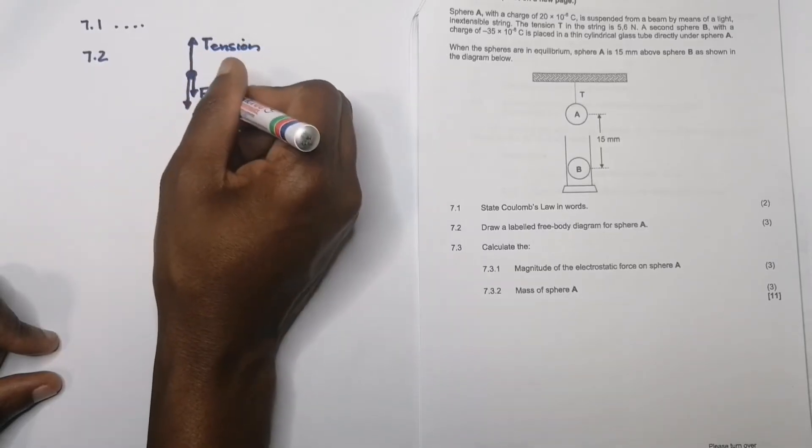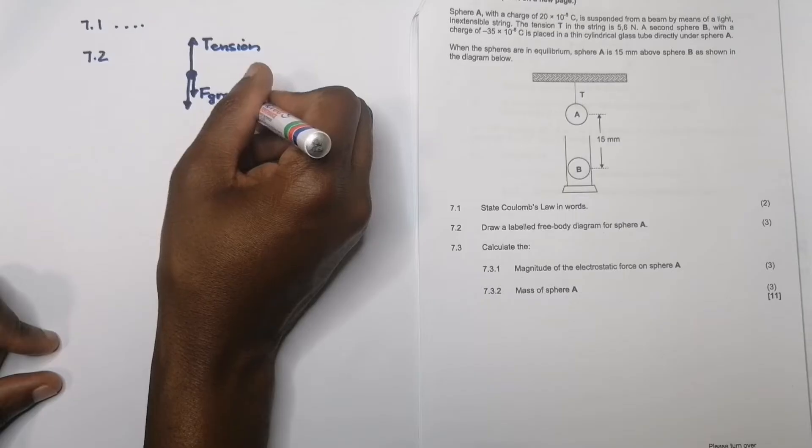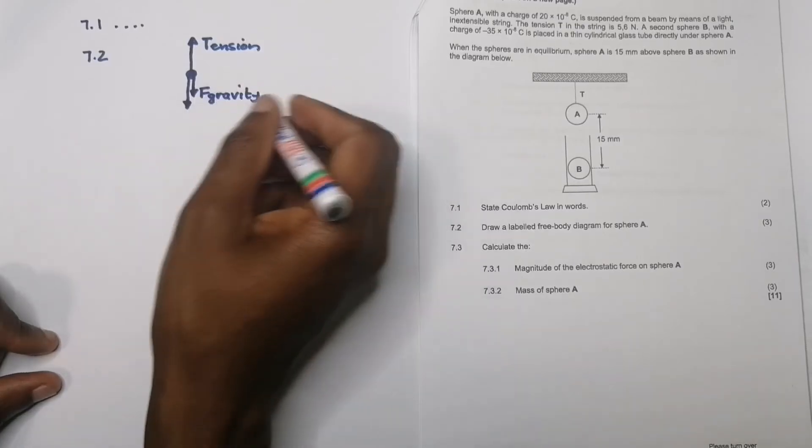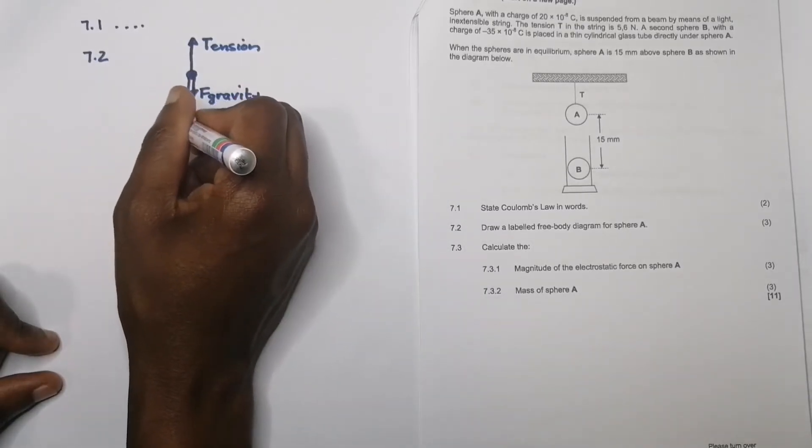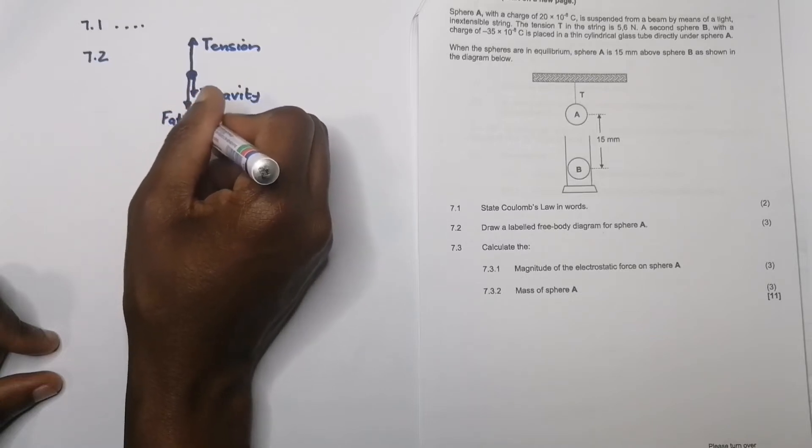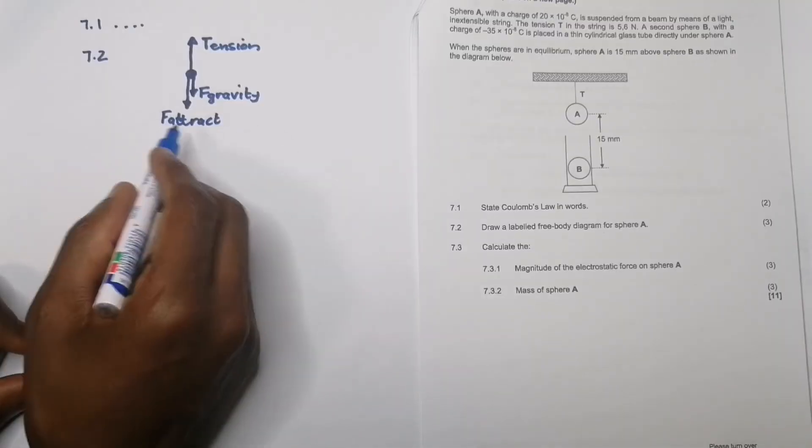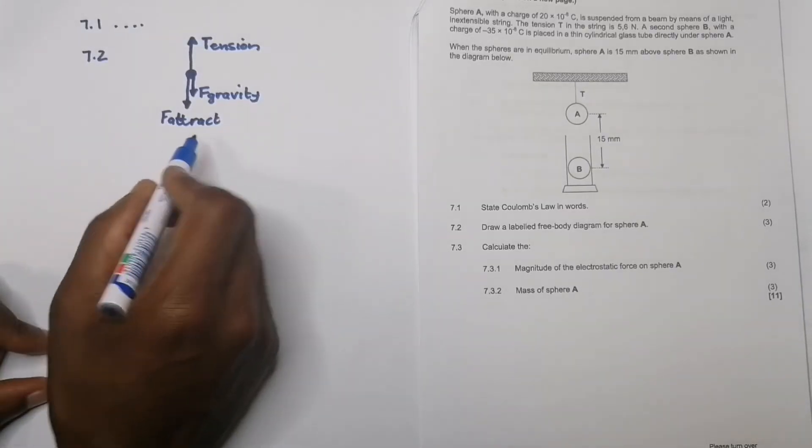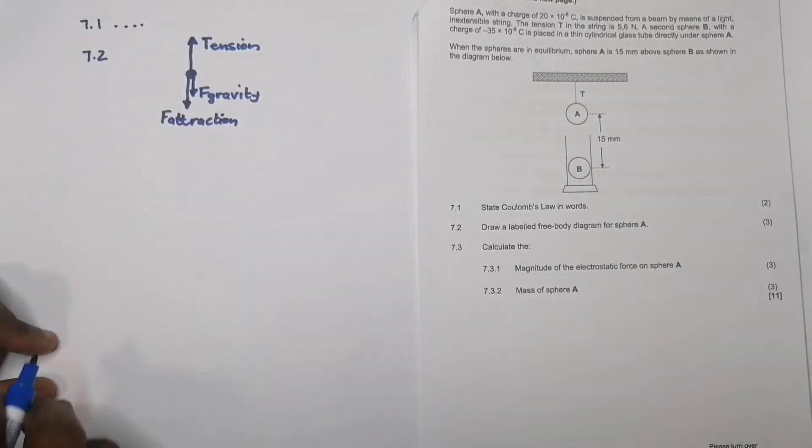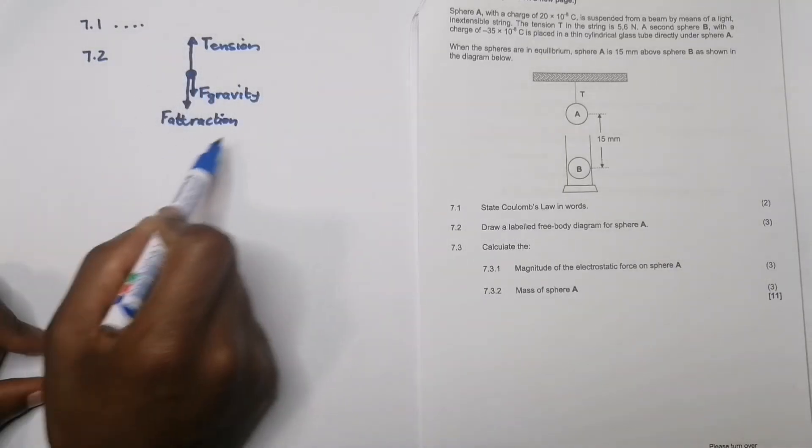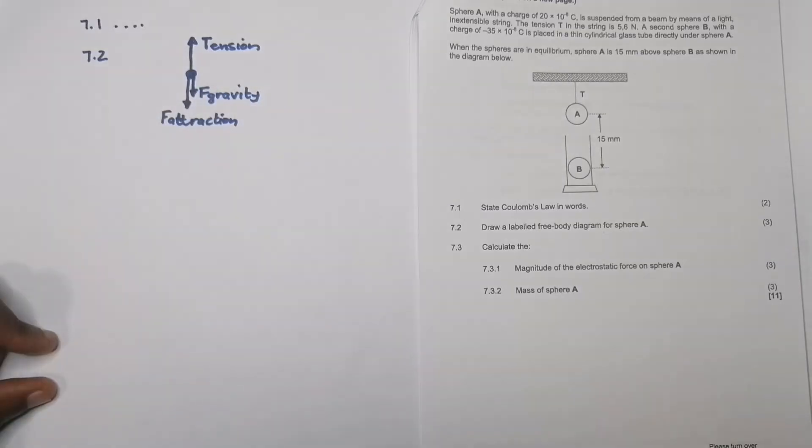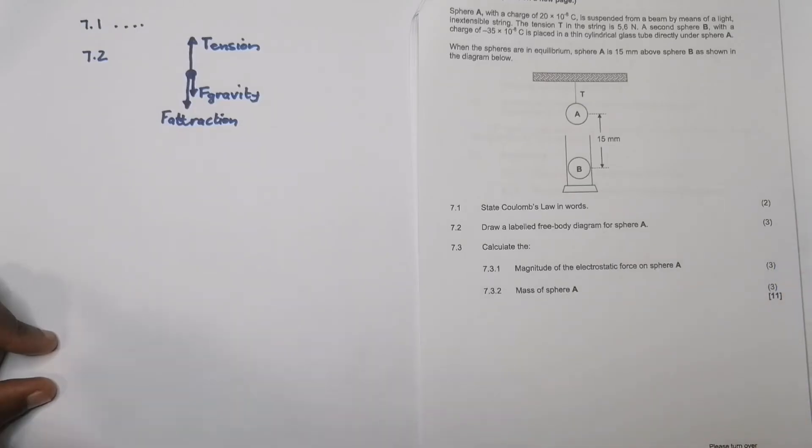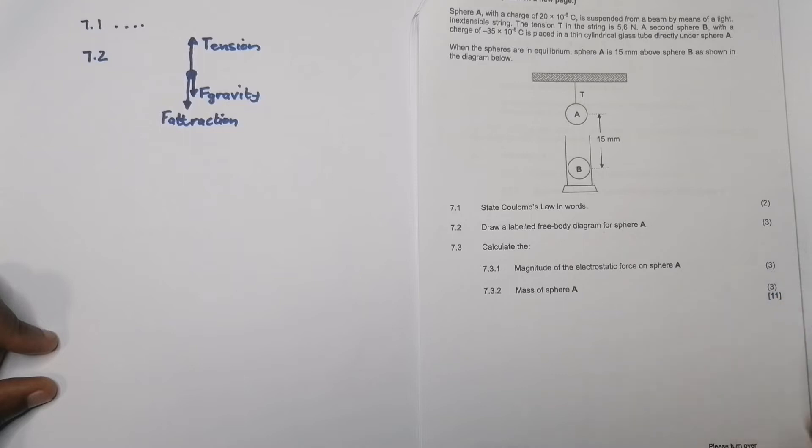Remember that there is also a force of gravity. This guy has mass, so gravity always pulls vertically downwards. This is going to be tension, this would be the force of gravity or the weight, and this would be the force of attraction or the electrostatic force. The number of forces you draw is determined by the number of marks—this is three marks, so I'm expecting three forces.